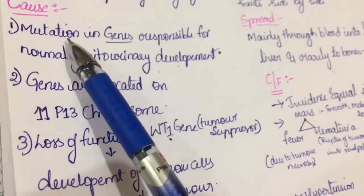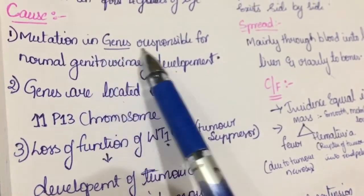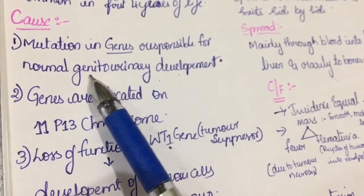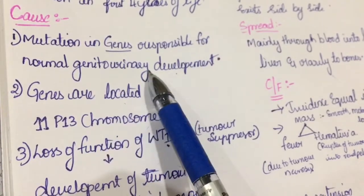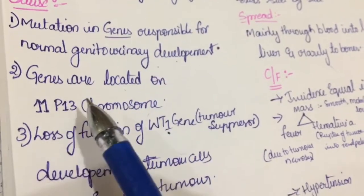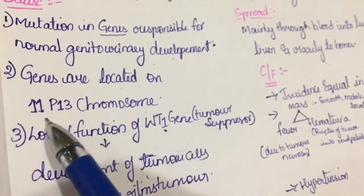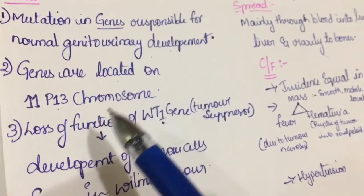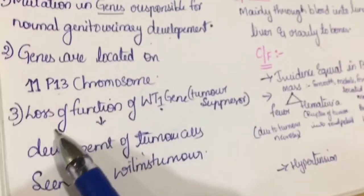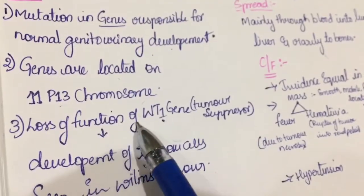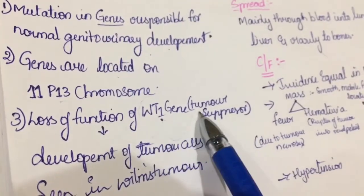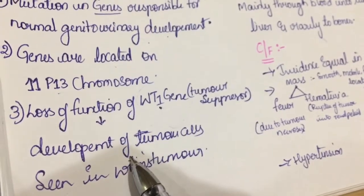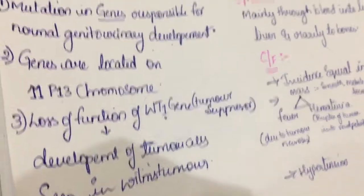Wilms tumor is caused by mutation in genes responsible for normal genitourinary development. These genes are located on chromosome 11p13, and there is loss of function of the WT1 gene, which is a tumor suppressor gene, causing development of tumor cells.